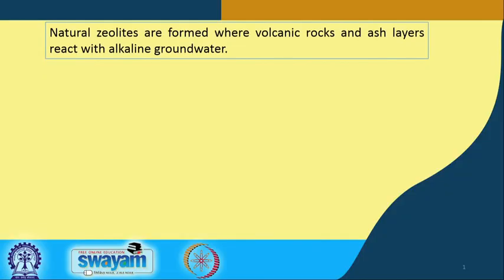Good morning everybody. We were still continuing with zeolite molecules and how we see that this is a naturally occurring material and we get it from different types of rocks. Natural zeolites are formed where volcanic rocks and ash layers basically react with alkaline groundwater.